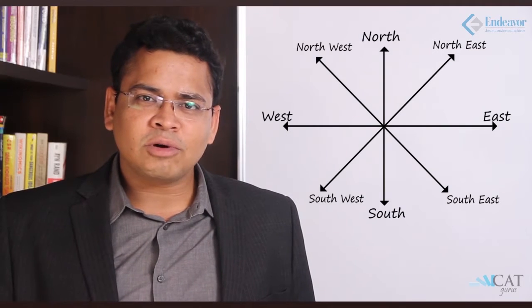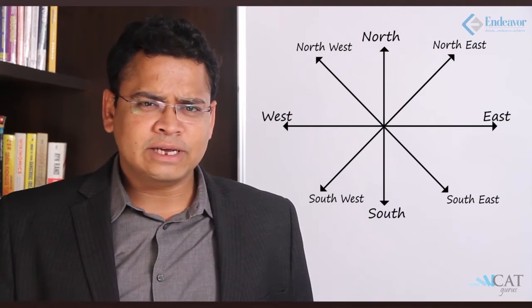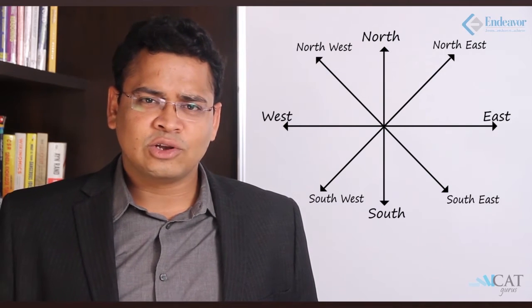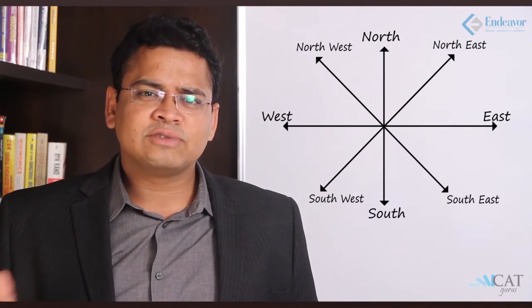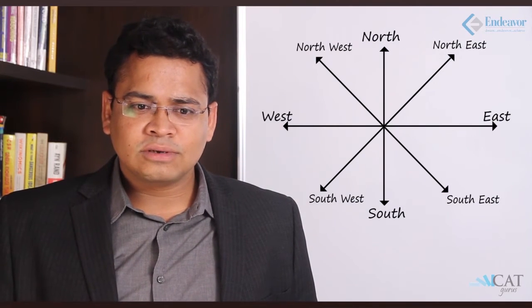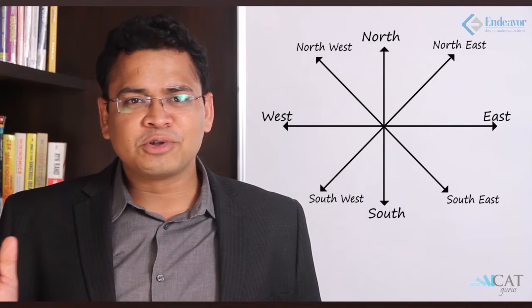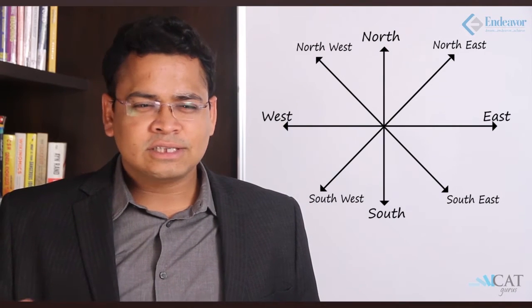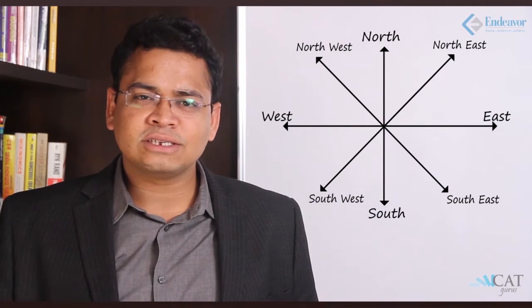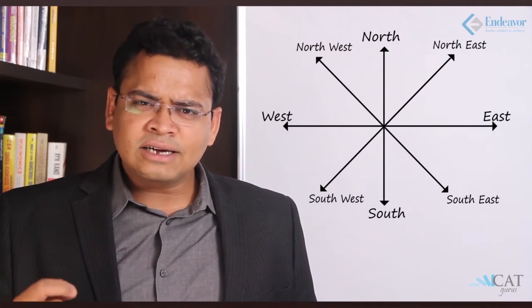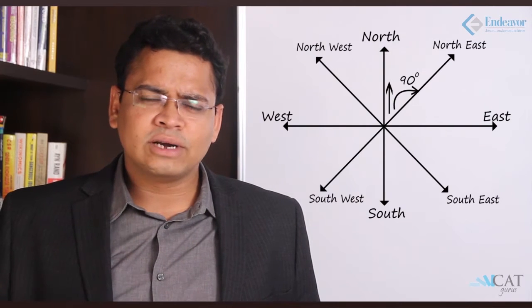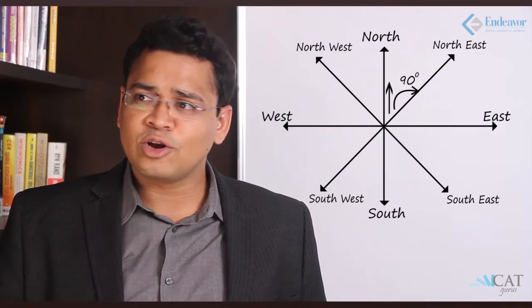Looking at the diagram on the board, we start with the four main directions: north, east, west, and south. If you are standing facing north, on your right is east, on your left is west, and your back faces south. There are also four intercardinal directions exactly 45 degrees between the cardinals — northeast, northwest, southeast, and southwest. When I say turn right, I mean exactly 90 degrees.